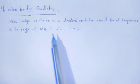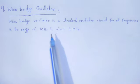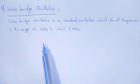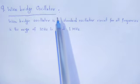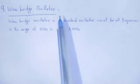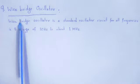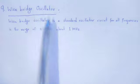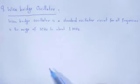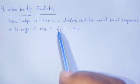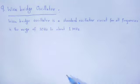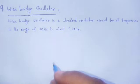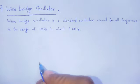Instead of a general amplifier, we use an op-amp, and in the case of the feedback network, we use the Wien Bridge arrangement. So the construction of the Wien Bridge Oscillator using an op-amp employs the Wien Bridge arrangement.